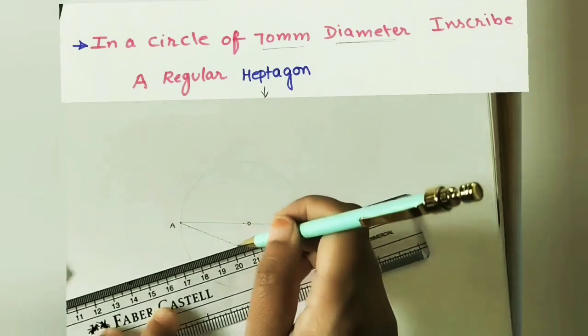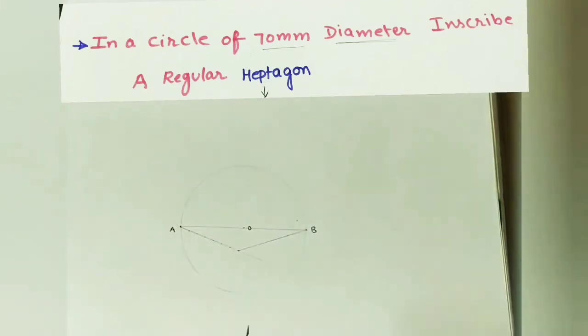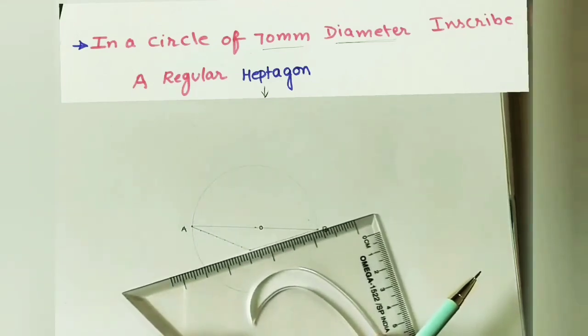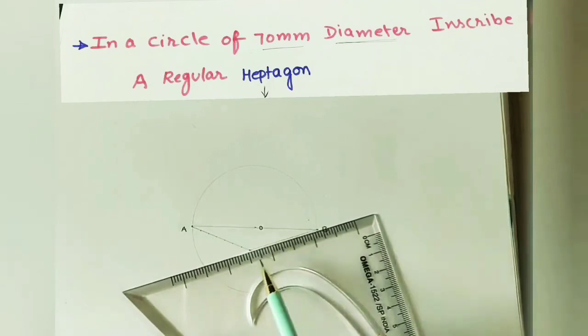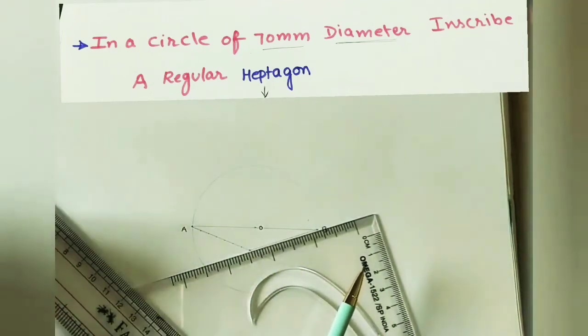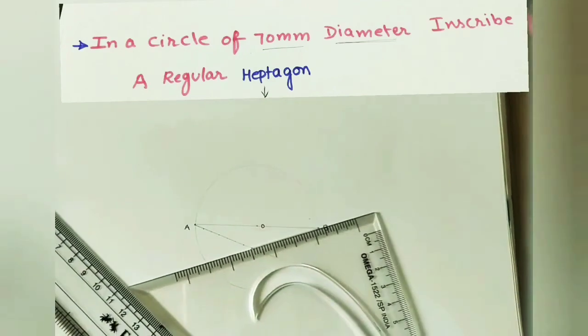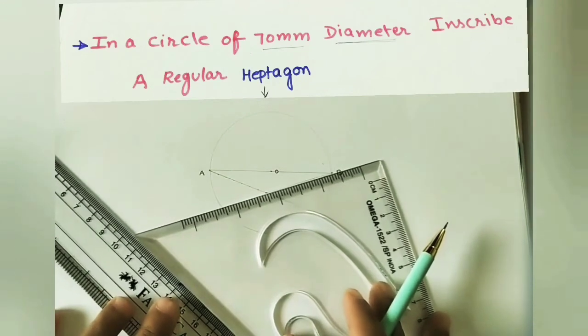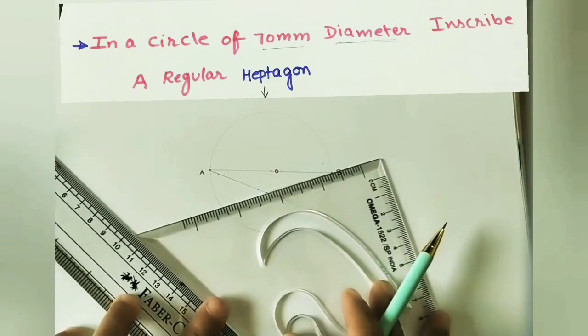We will get an inclined line, and at all the points we have to draw lines parallel to this last line. For getting the parallel lines, keep the set square coinciding with this line and keep the scale for getting the parallel lines. Move the set square to all the points for getting the parallel lines.